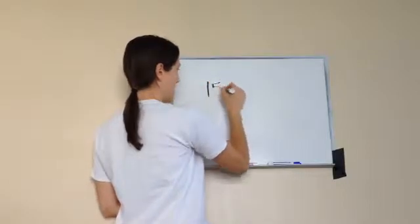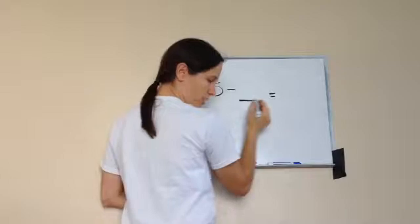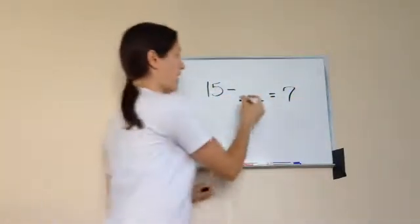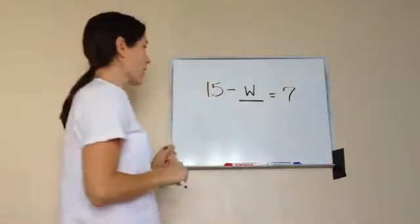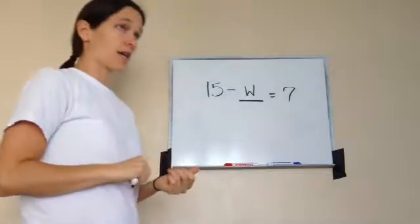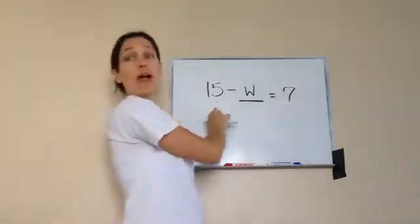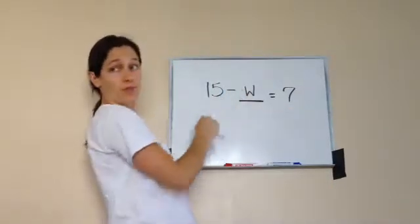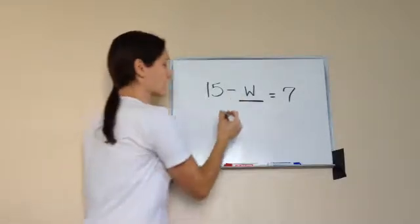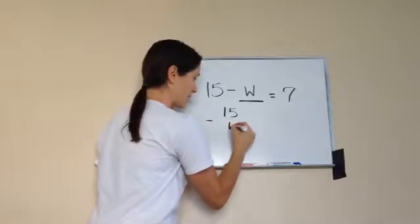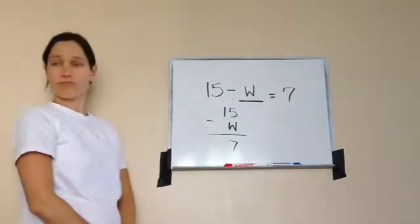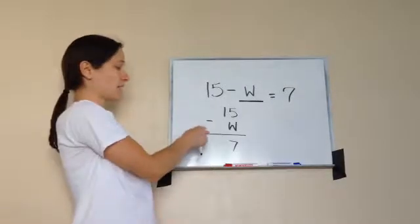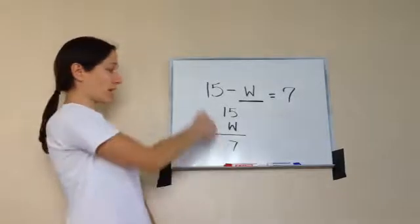Now let's do subtraction. For example: 15 minus something equals 7. I'm going to put a letter in here — I've chosen W, which just means 'what's the answer.' This is called an equation in math. We're going to figure out what that missing number is. So I'll set this up going down: 15 minus W equals 7. You see how that's the same thing — I just wrote one vertically and one horizontally.